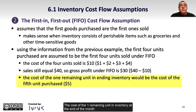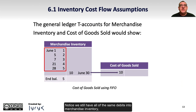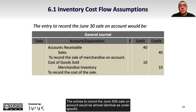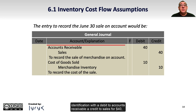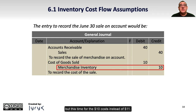The cost of the 1 remaining unit in inventory at the end of the month would be the cost of the 5th unit purchased at $5, the most recent one. Under FIFO, the T-accounts show the same debits into merchandise inventory, but the cost of goods sold is now $10, credited to inventory and debited to the cost of goods sold account. The entries to record the June 30 sale would include a debit to accounts receivable, a credit to sales for $40, and a debit to cost of goods sold and credit to merchandise inventory for the $10 cost instead of $11.